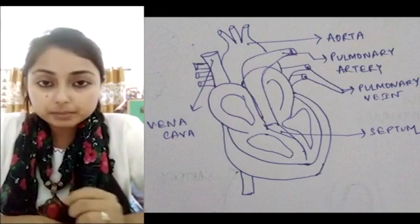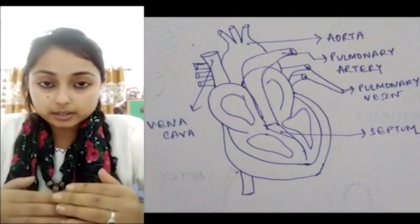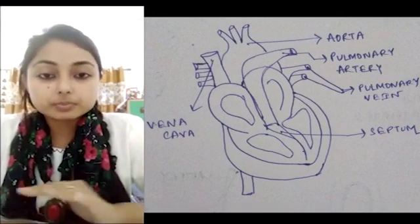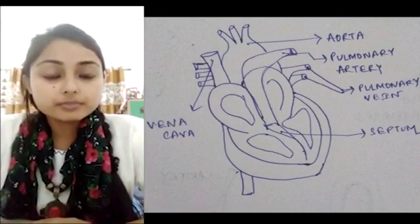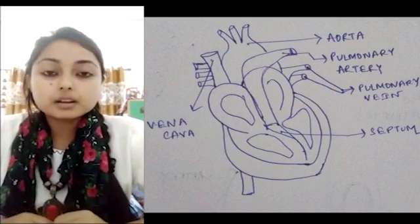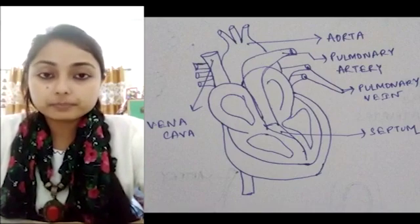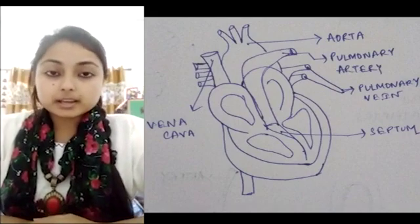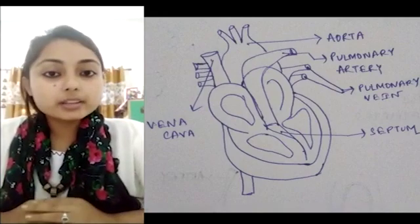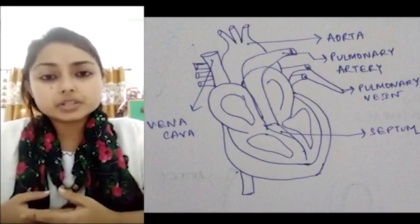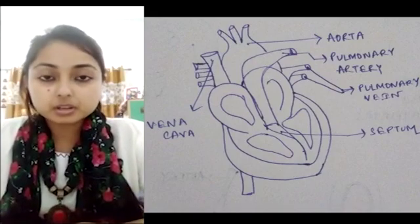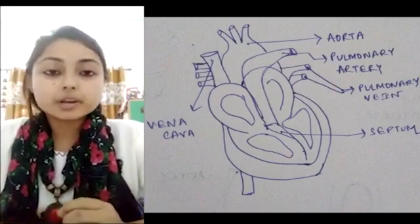The upper two chambers are called auricles — also called atria — and the lower two chambers are called ventricles. They are separated by a septum, and in between the auricle and ventricle there are valves present which provide a boundary. The auricles receive blood and send it to the ventricles. Auricles have thin walls because their function is limited — they only pass blood downward to the ventricles, requiring very little effort.